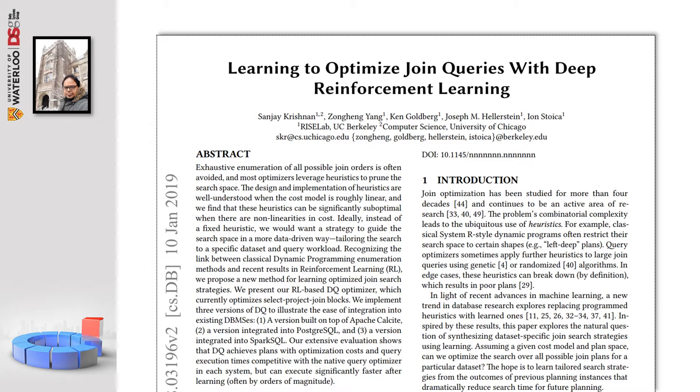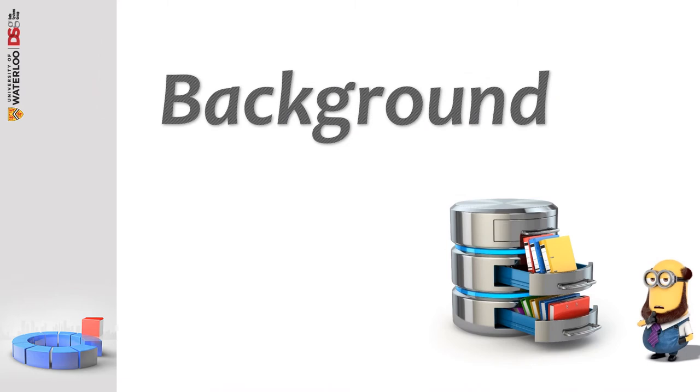I am Enamul Hawke from the Data Systems Group, and today I am going to present the paper titled Learning to Optimize Join Queries with Deep Reinforcement Learning by Sanjay, Jongheng, Kane, Joseph and Ion, where they have successfully applied deep reinforcement learning at optimizing SQL joins and claiming that this technique executes up to 10 times faster than classical dynamic programs and 10,000 times faster than exhaustive enumeration. Let's begin with the background.